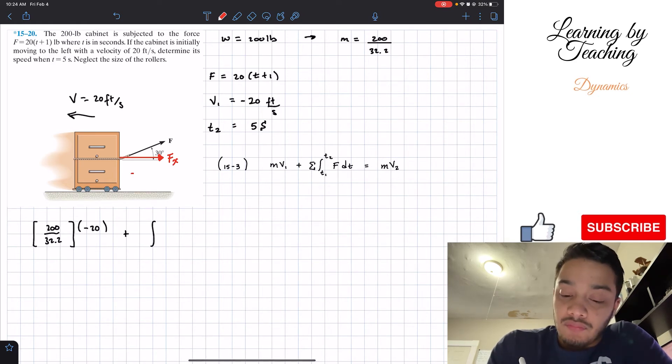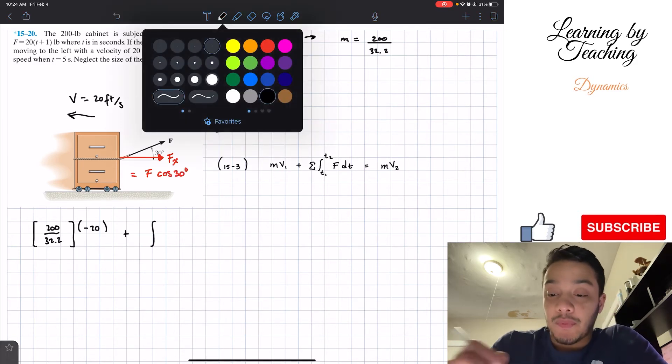And well, this force is basically F multiplied by the cosine of 30, as you guys probably know at this point.